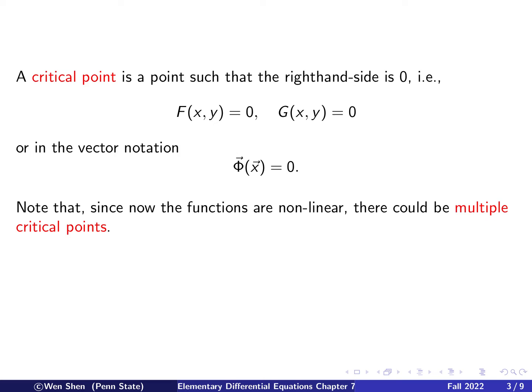How do we find the critical points, and do they exist or are they unique? Since we're talking about nonlinear equations, the functions capital F and capital G are not necessarily linear, so the situation is more complicated. There might be no solutions, one solution, multiple solutions, or in principle infinitely many solutions — it very much depends on the functions F and G, so each situation must be analyzed individually.